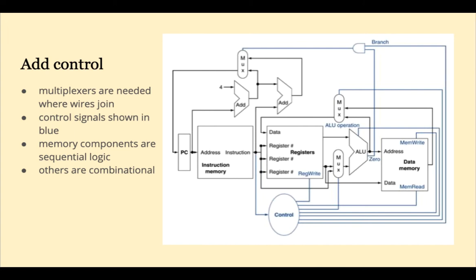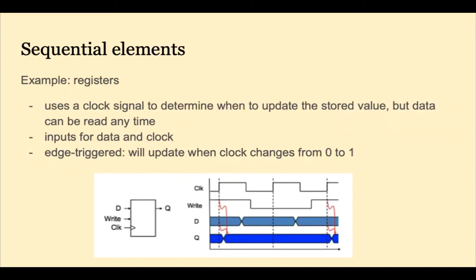Most of the circuits we see, including the ALU and the adders, are combinational logic. But any memory component will be sequential logic. Sequential logic operates on a system clock. Our book assumes that things happen on the rising edge of the clock. Data can be read any time, but the clock signal is used to determine when to write to memory.